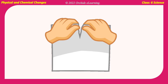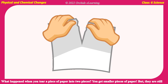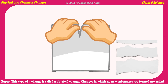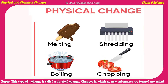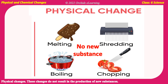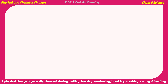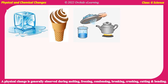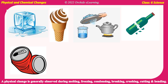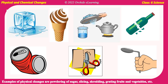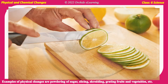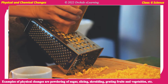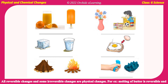Physical and chemical changes: What happens when you tear a piece of paper into two pieces? You get smaller pieces of paper, but they are still paper. This type of change is called a physical change. Changes in which no new substances are formed are called physical changes. These changes do not result in the production of new substances. Physical changes are generally observed during melting, freezing, condensing, breaking, crushing, cutting, and bending. Examples of physical changes include powdering of sugar, slicing, shredding, and grating fruits and vegetables. All reversible changes and some irreversible changes are physical changes.